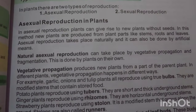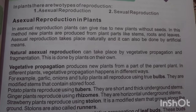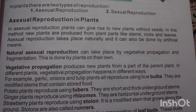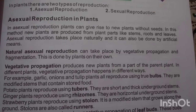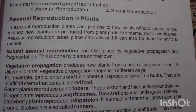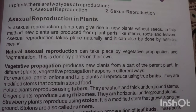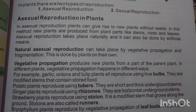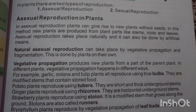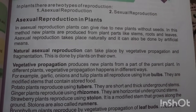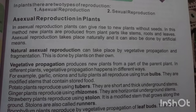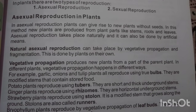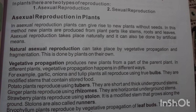In asexual reproduction, plants can give rise to new plants without seeds. New plants are produced from plant parts like stems and roots. Asexual reproduction takes place naturally and can also be done by artificial means. Natural asexual reproduction includes vegetative propagation and fragmentation, carried out by plants on their own.